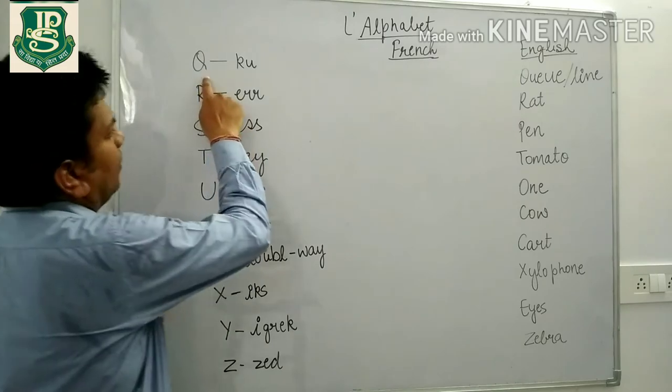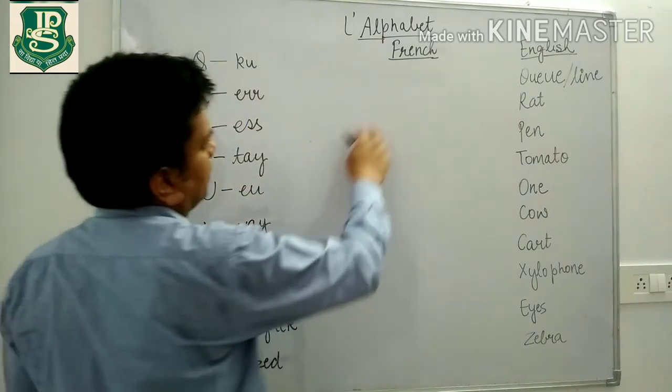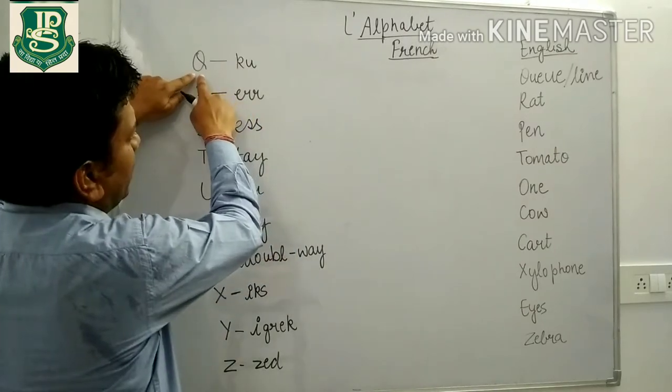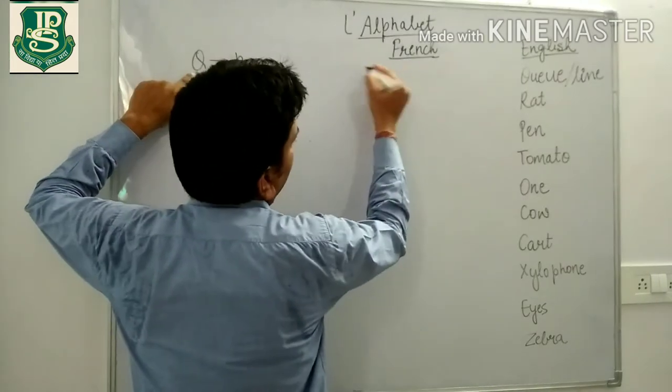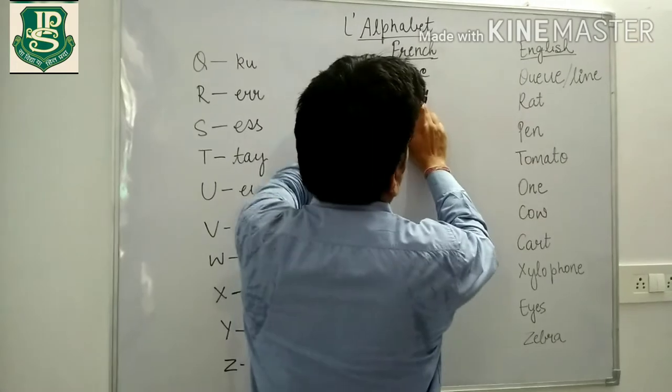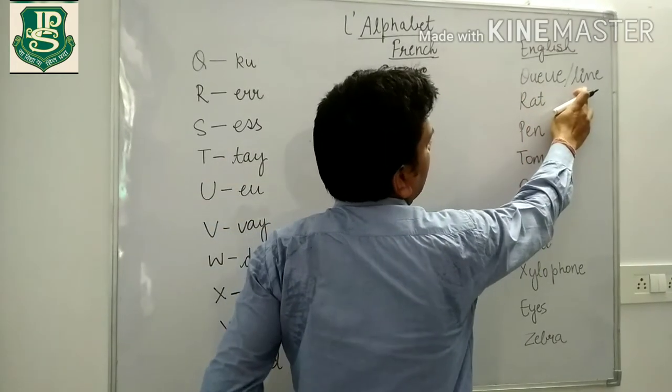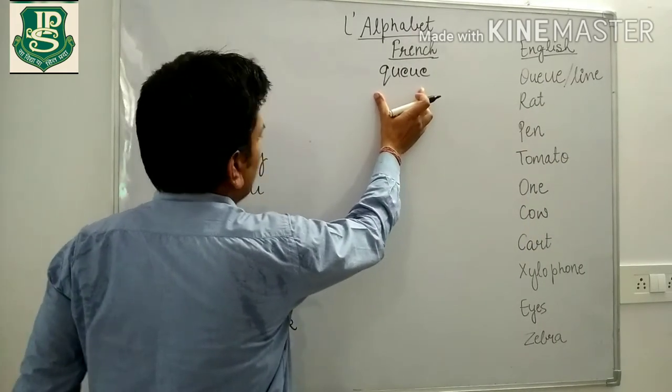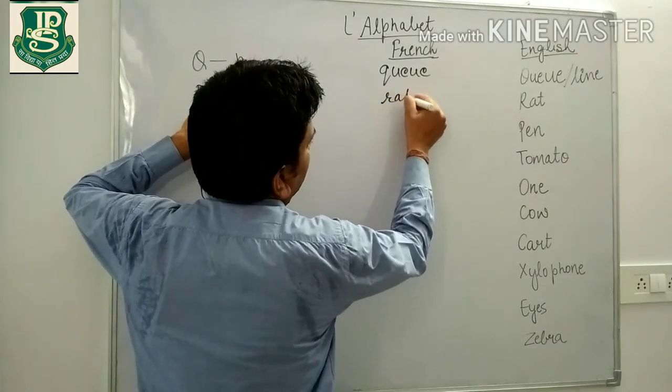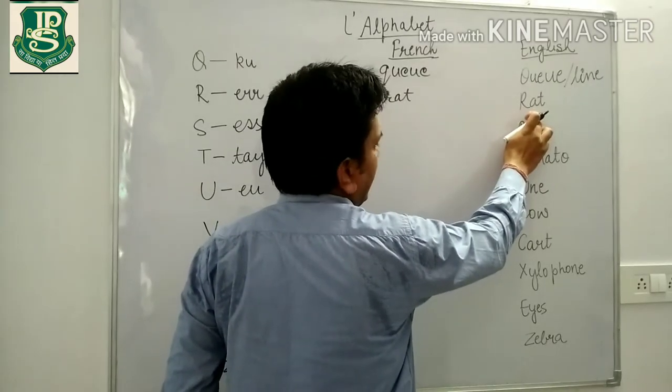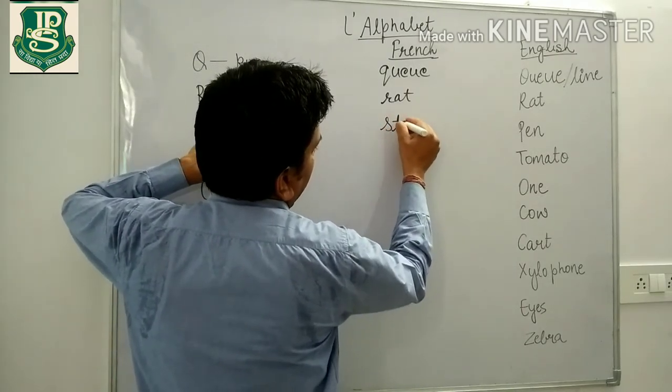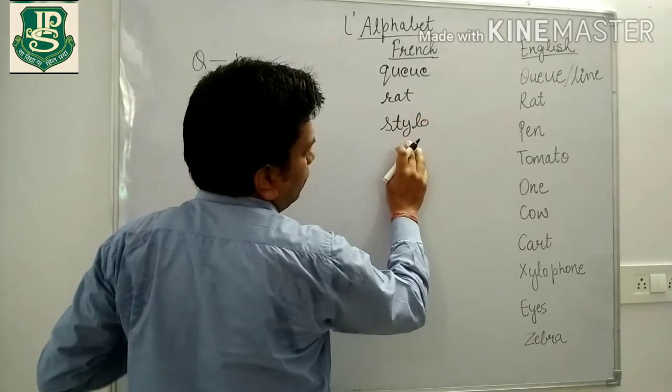Now students, we are going to start the French words here and English meanings I have already written here. Very first we are going to write Q for the same word is there, Q. The English meaning is also Q or you can say line also. The pronunciation is Q. Here is R, R means rouge, rouge means red. S for Stilo meaning pen.